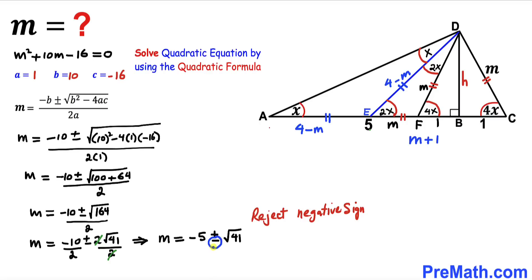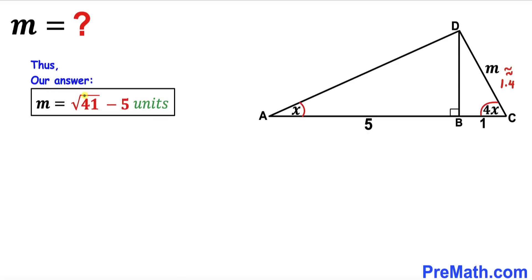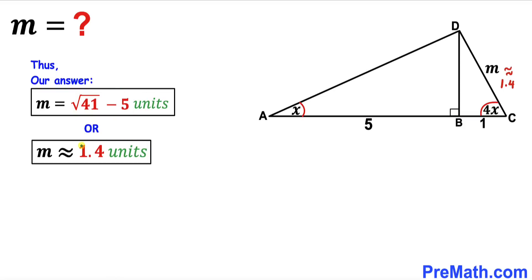We discard the negative sign since a side length must be positive, so we keep only the positive solution. Therefore M = √41 − 5. Our M value turns out to be √41 − 5 units, which is approximately equal to 1.4 units. Thanks for watching, and please don't forget to subscribe to my channel for more exciting videos.